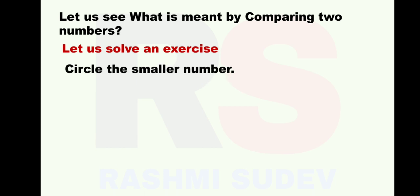Circle the smaller number. You have studied this in Senior KG as well as in First Standard. First sum: 3 and 4 are the given numbers. Tell me which is the smaller number. Yes, correct - 3 is the smaller number.